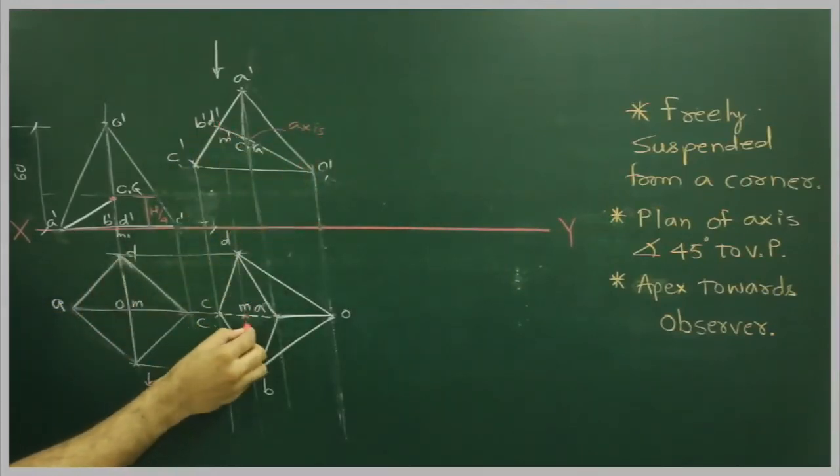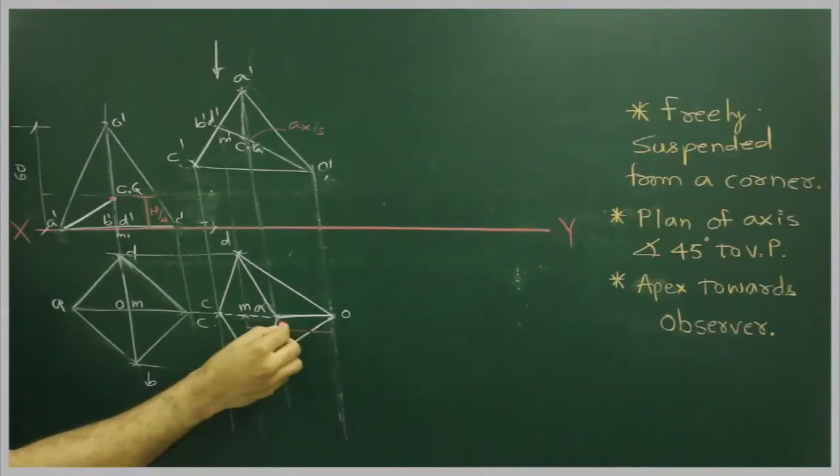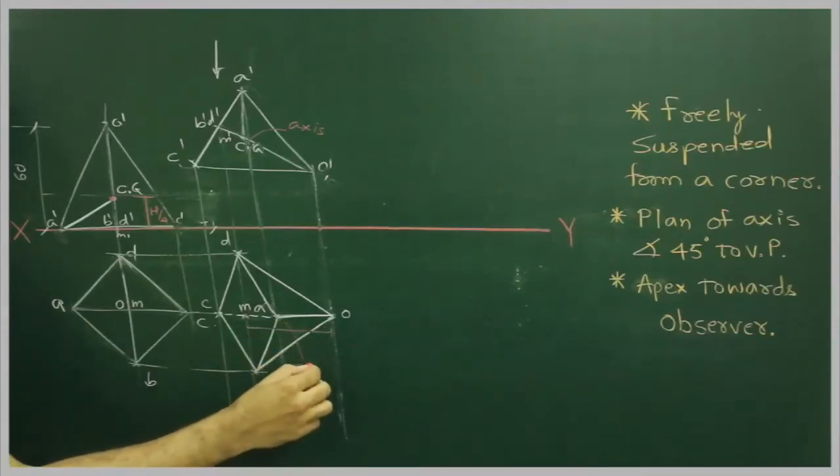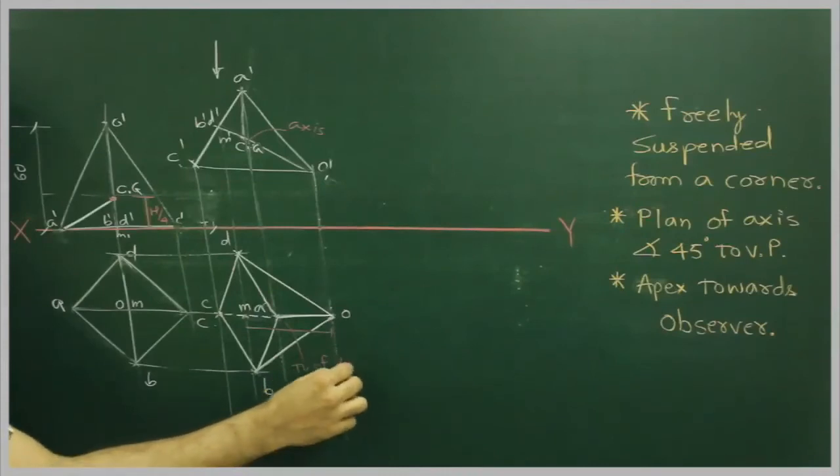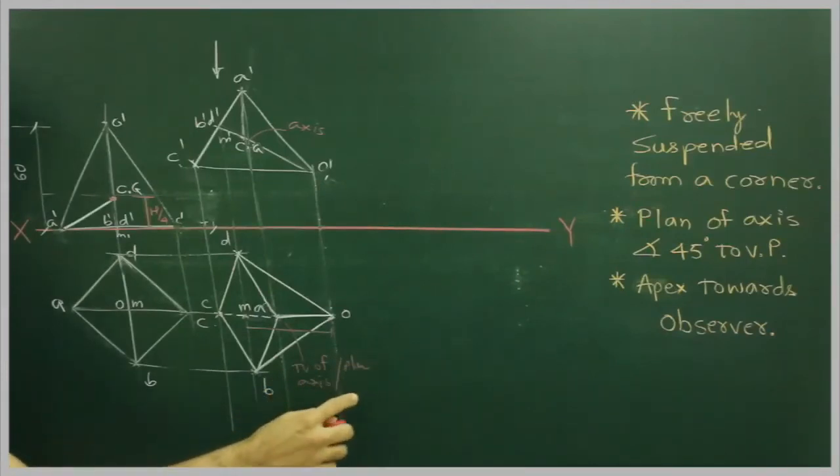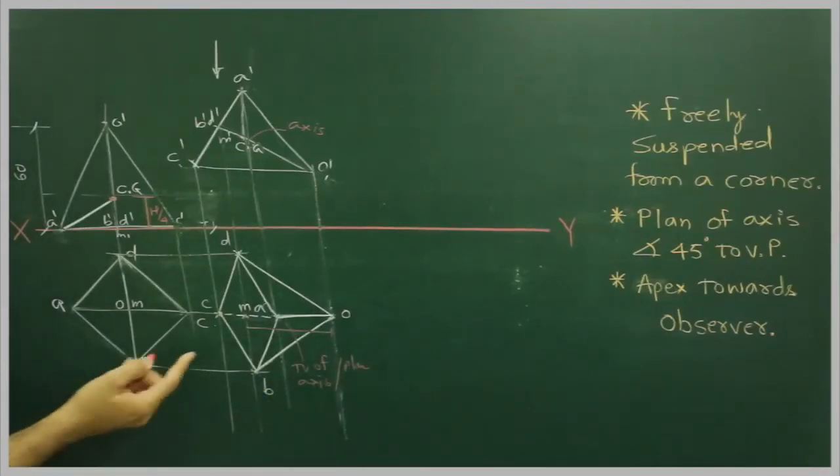Top view of axis, this is top view of axis or you can say plan of axis. Right? So this inclined at 45 degree to VP and apex towards the observer. So what we will do?